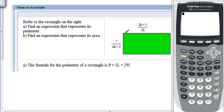For argument's sake, we're just going to call this longer side here the length. So, 2K plus 1 over 28 is the length, and this shorter side will be the width, 7 over 4K plus 2. I already have written down here that the formula for the perimeter of a rectangle is P equals 2L plus 2W.